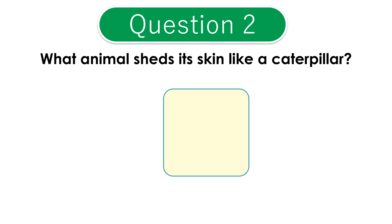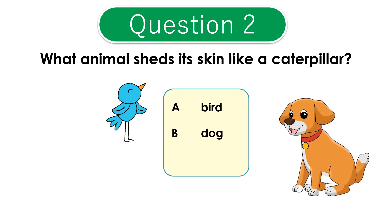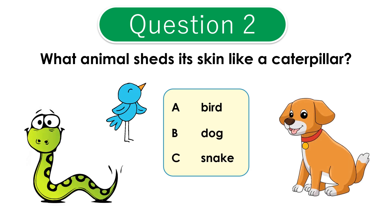Question 2: What animal sheds its skin like a caterpillar? A: bird. B: dog. C: snake. The correct answer is C: snake.